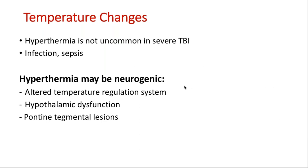Regarding temperature: hyperthermic patients may have sepsis — which must always be ruled out — or central fever. Central fever can occur from hypothalamic dysfunction, pontine tegmental lesion, or traumatic brain injury, where patients may develop paroxysmal sympathetic hyperactivity with episodes of high fever, tachycardia, and sympathetic overflow.